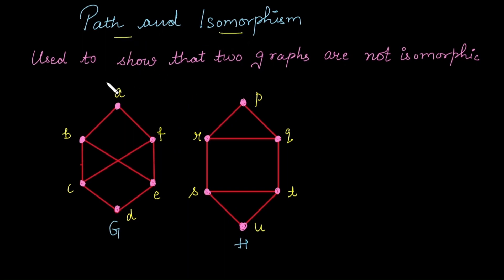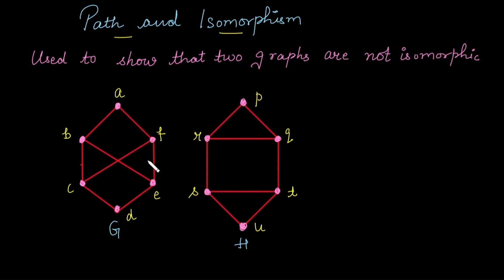Path and isomorphism. The concept of path is used to show that two graphs are not isomorphic. The basic idea is we will find a simple circuit of a particular length that exists in one graph but does not exist in a second graph. If we get such a case, we can clearly say that graph G is not isomorphic to graph H.